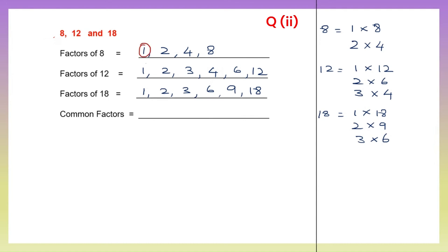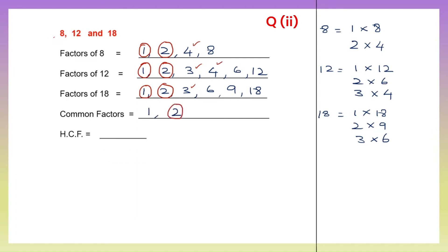1 is common to all three. Then 2 is common to all three. Is there any other number common to all three? We have 4 in 8 and 12, but it's not there for 18. We have 3 in 12 and 18, but it's not there for 8. So the common factors are just 1 and 2. We pick out the highest one, which is 2. So the HCF is 2.